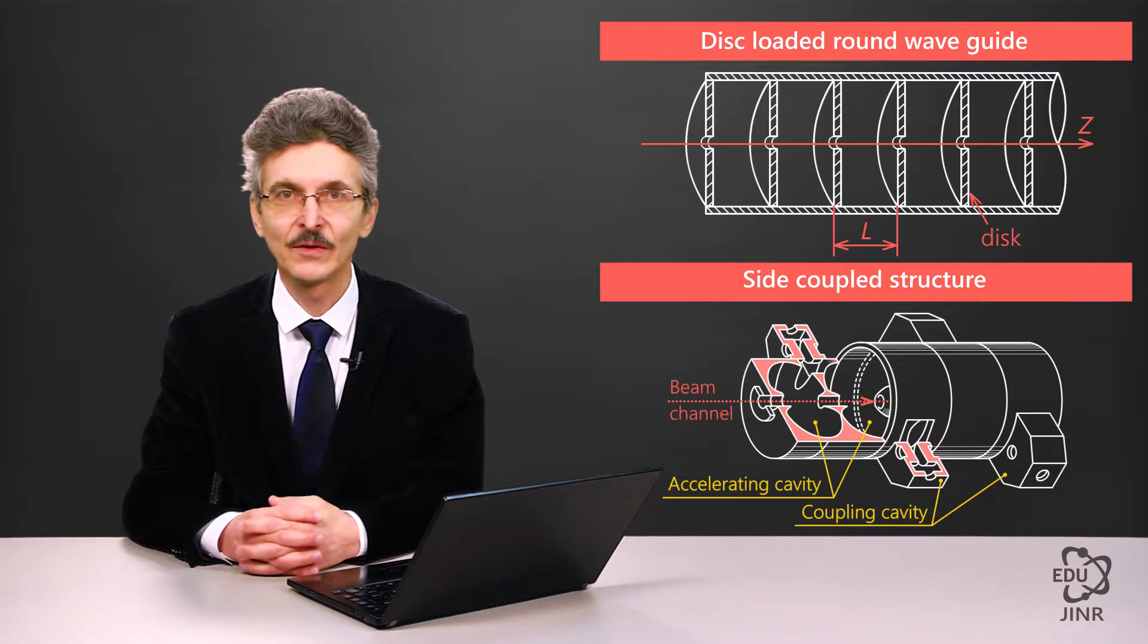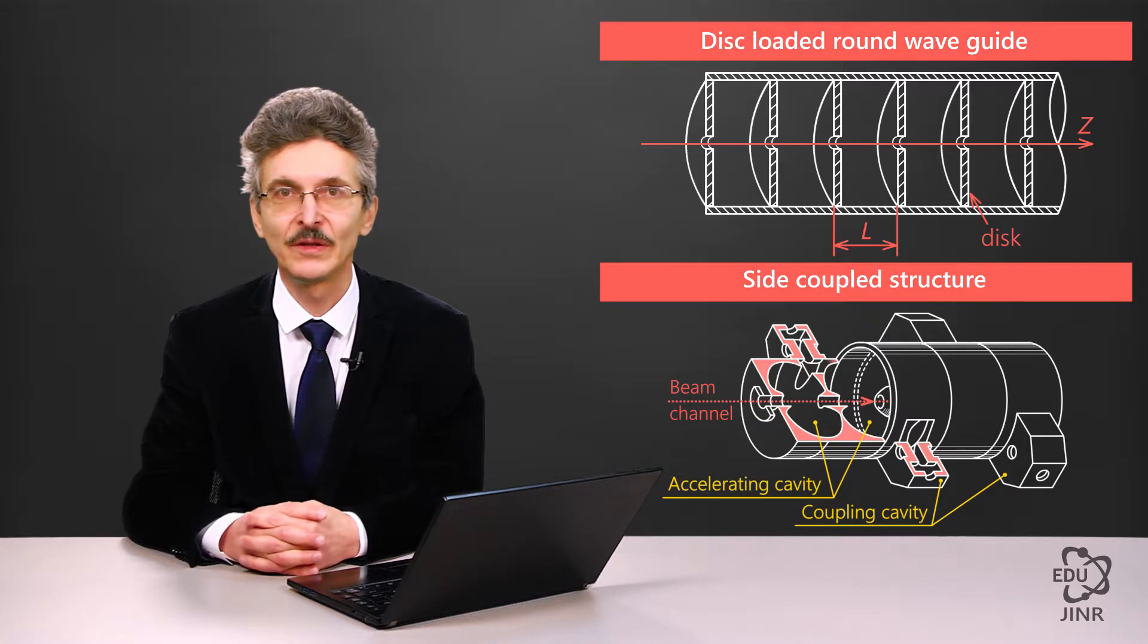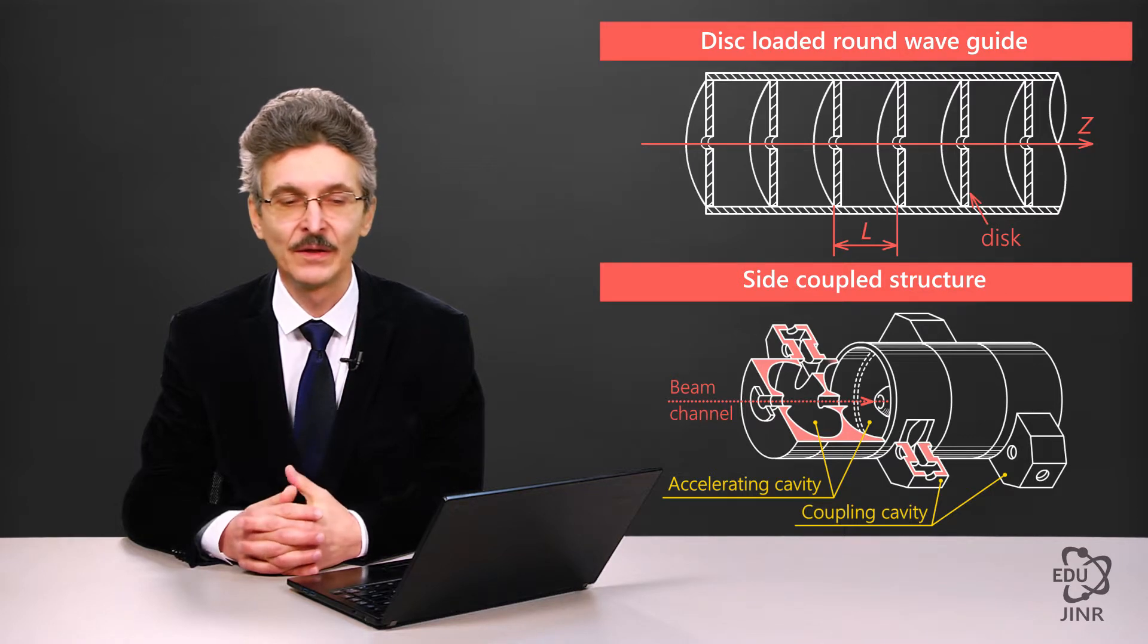The simplest decelerating structure that emerged before others was a round waveguide loaded with diaphragms, the so-called round diaphragm waveguide. Decelerating structures may be more complex. For example, they may be a chain of strongly bound resonators.